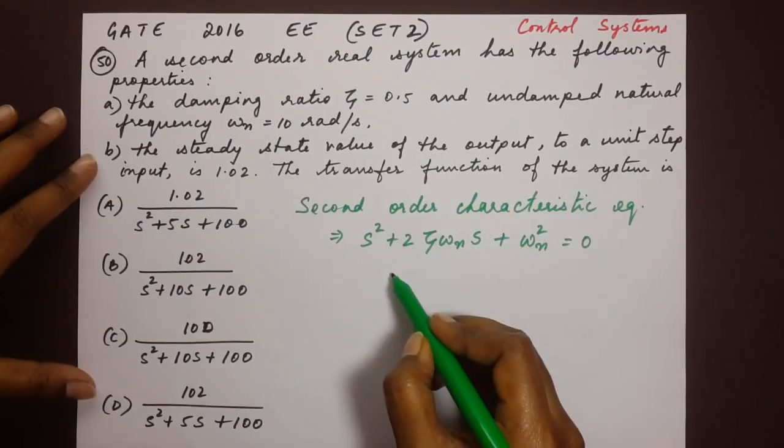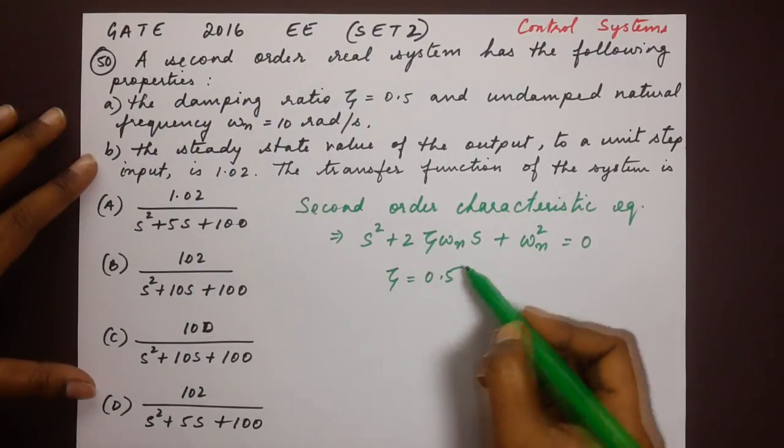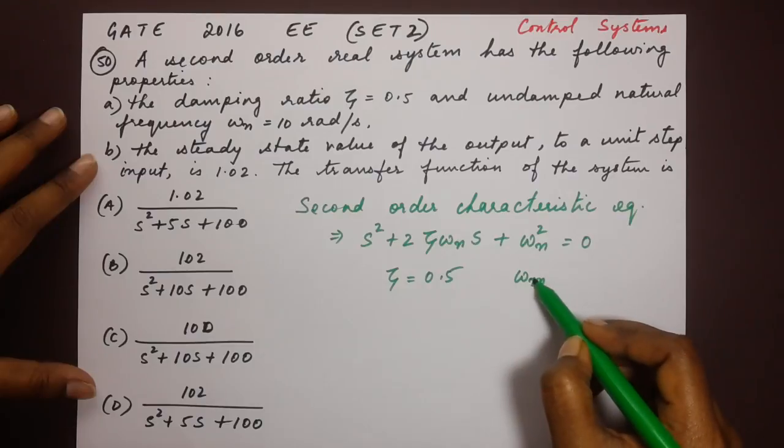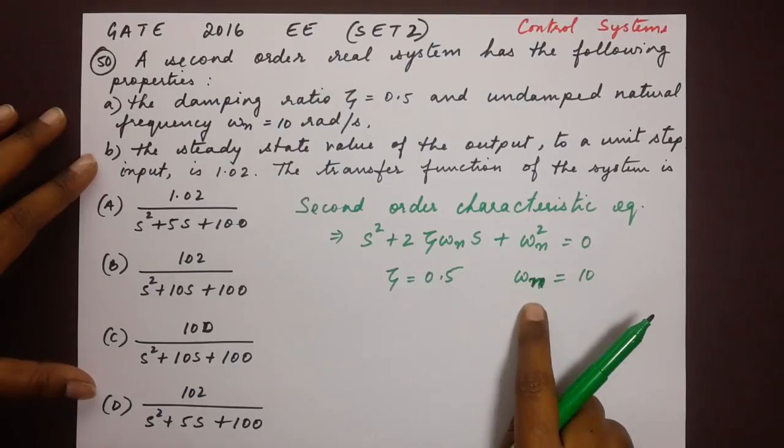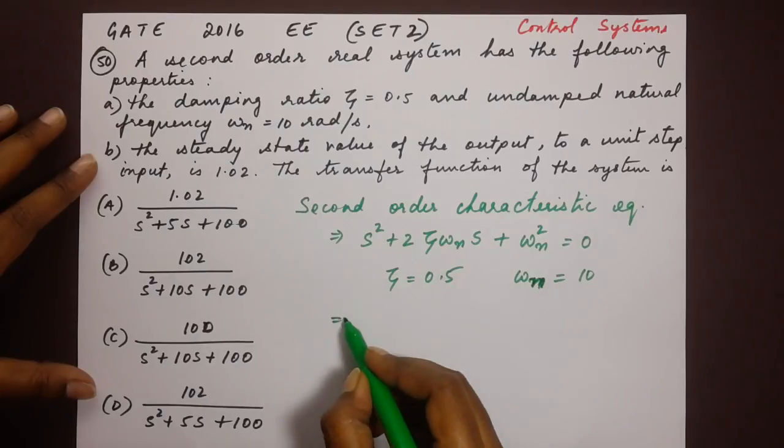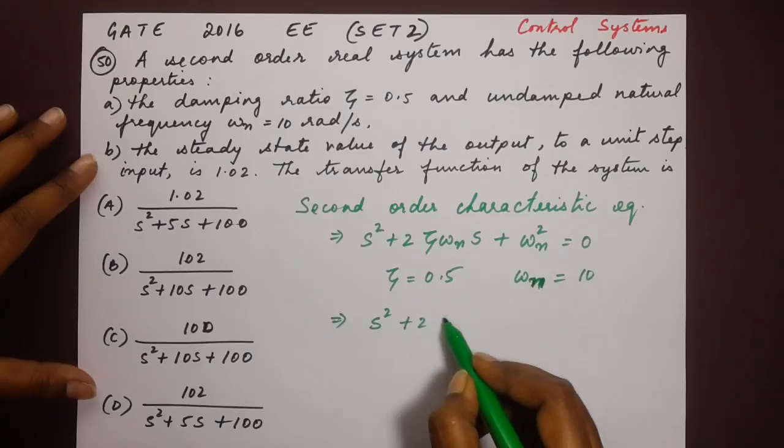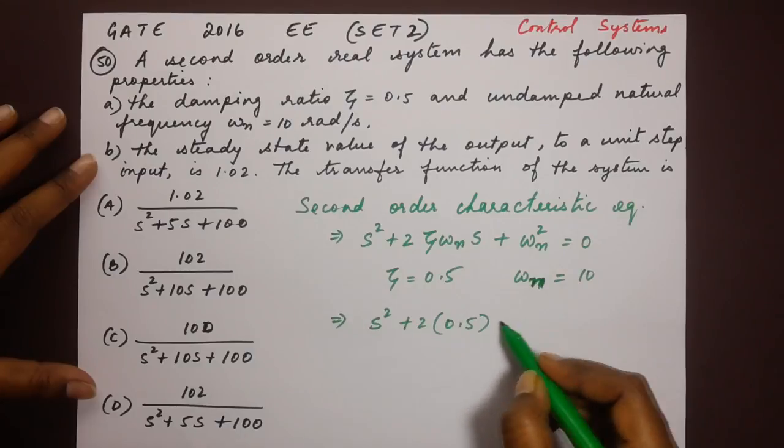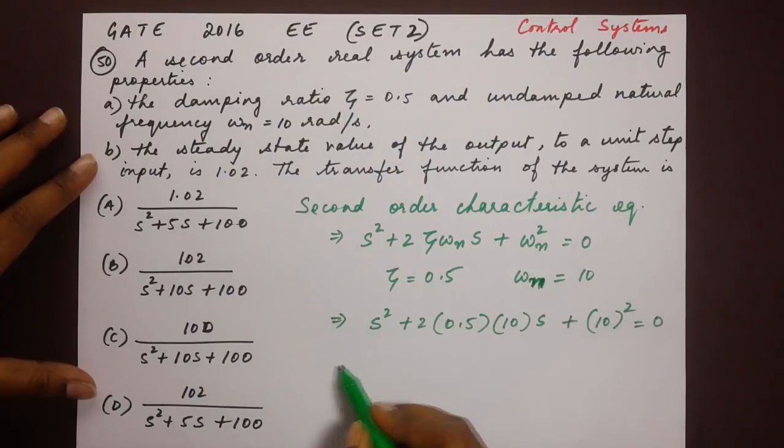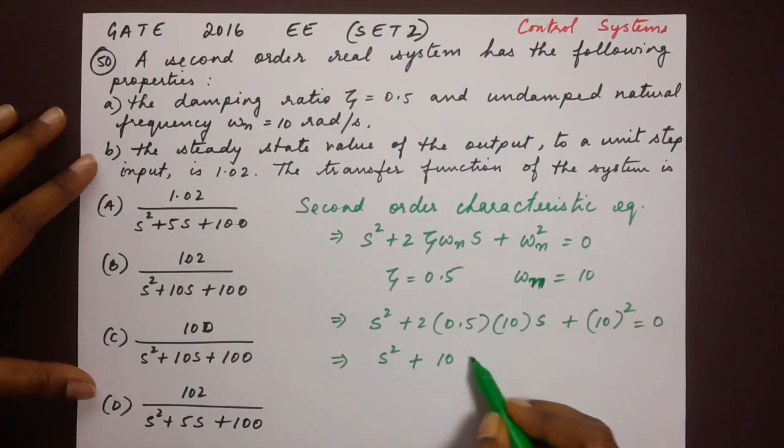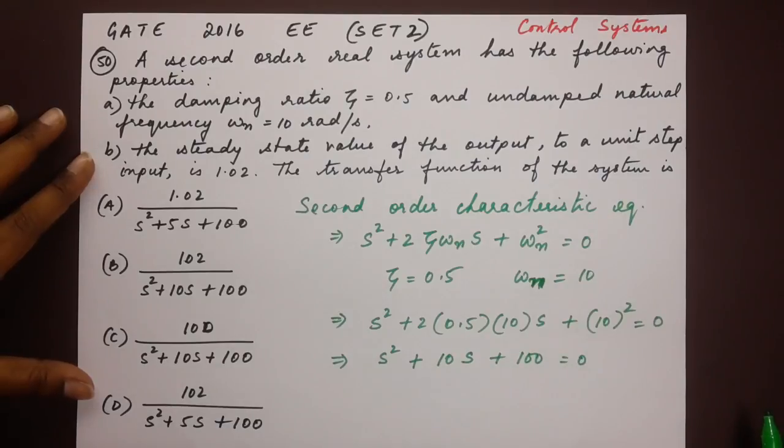We have been given that ξ value is 0.5 and frequency ωn is 10. Let us substitute these values in the above equation. We get s² plus 2 into 0.5 into 10s plus 10² equals 0, which gives us s² plus 10s plus 100 equals 0. This is our characteristic equation.